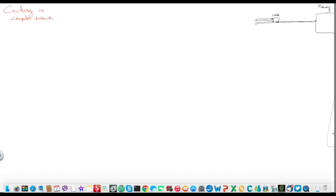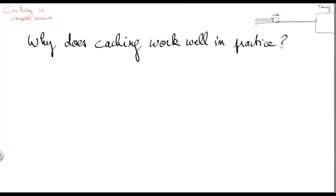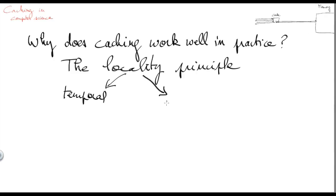So now the question is, why does caching usually work very well in practice? Actually, this is due to a property that we can observe empirically. When we take a lot of very different programs and run them, they have something in common, which is a phenomenon that we call the locality principle. To be more precise, there are two forms of locality: temporal locality and spatial locality.